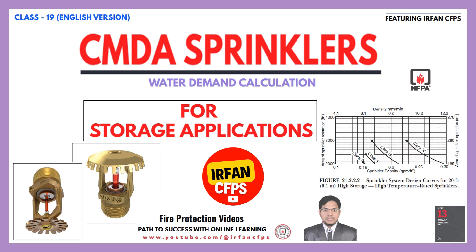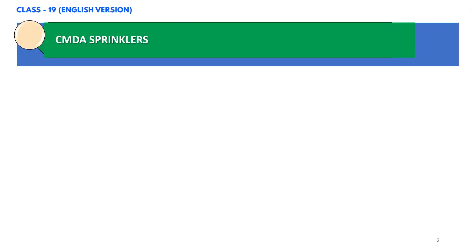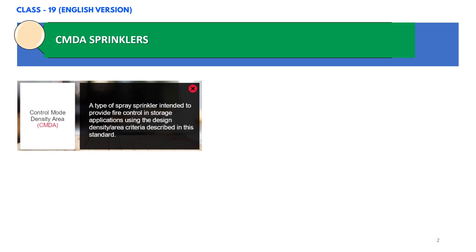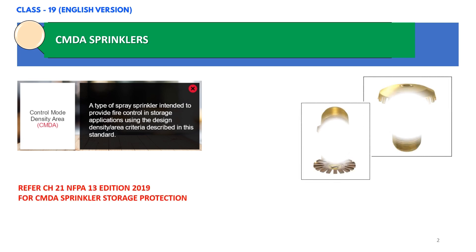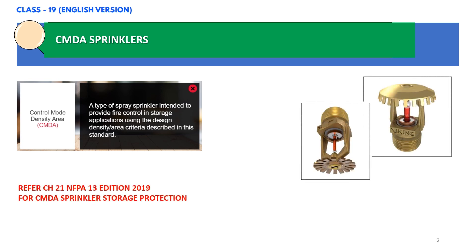Let us try to understand what exactly is a CMDA sprinkler. CMDA stands for Control Mode Density Area, and these sprinklers refer to a specific type of sprinkler listed for control of fires in storage applications. In other words, as you can see on your screen, it is a type of spray sprinkler intended to provide fire control in storage applications using the design density area criteria described in NFPA 13 standard.